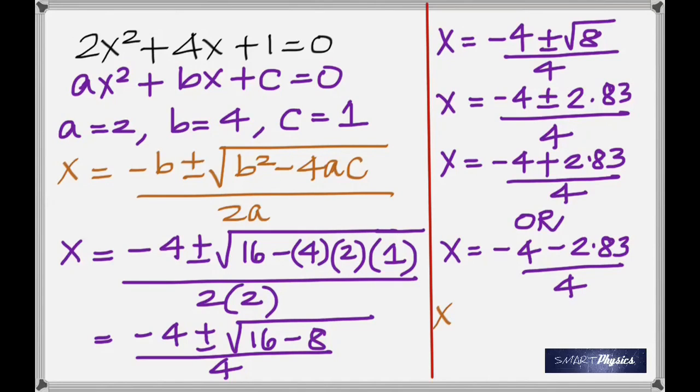So normally a quadratic equation has two answers. The first one gives -0.293 and the second one gives -1.708.